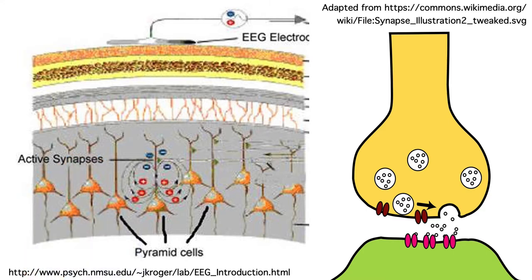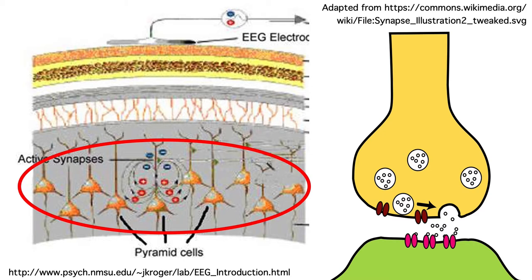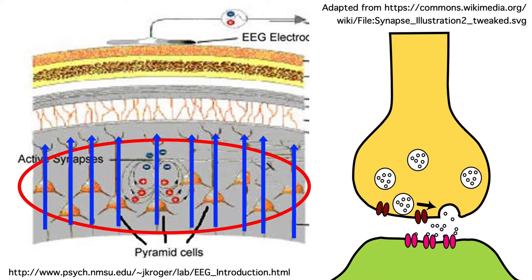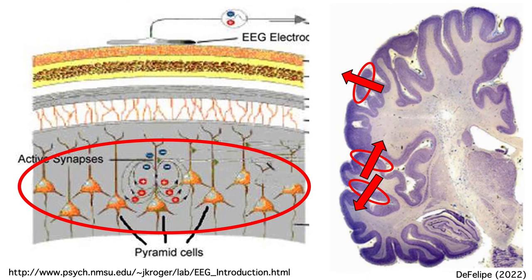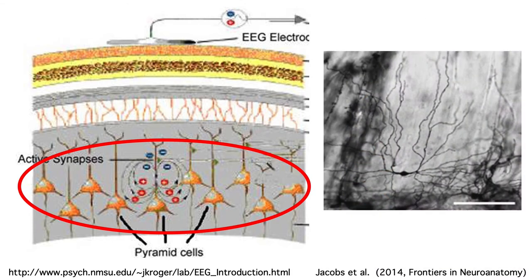Also, almost all ERPs arise from the pyramidal cells of the neocortex. Pyramidal cells are the main input-output neurons of the cortex, and they have an important geometrical property. They're all aligned perpendicular to the surface of the cortex. But this doesn't mean that they're perpendicular to the scalp. The cortex is all folded up, so the pyramidal cells in different patches of cortex point in very different directions relative to the scalp. Interneurons don't have this kind of consistent geometry with respect to the cortical surface, so they don't contribute directly to ERPs.